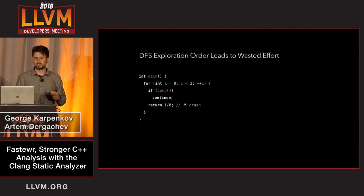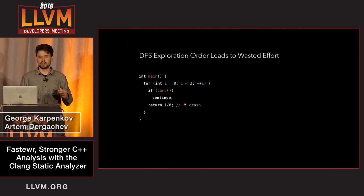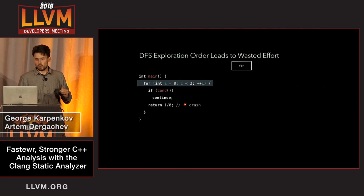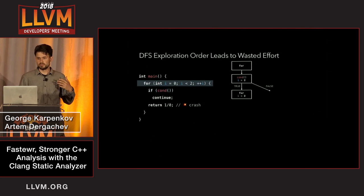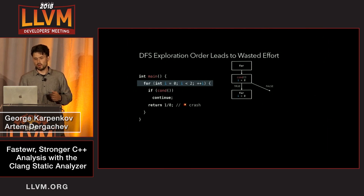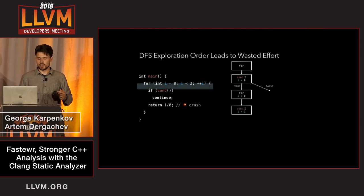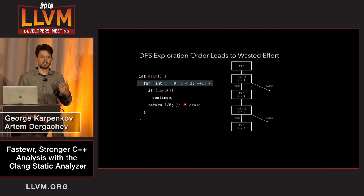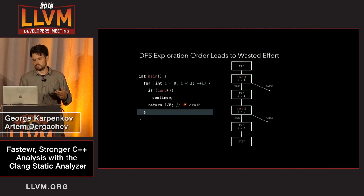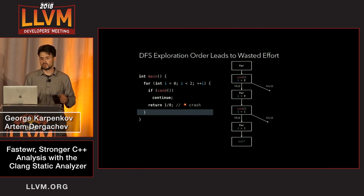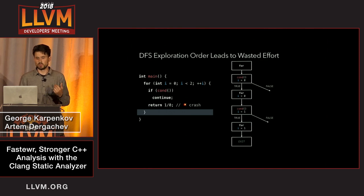Previously, the analyzer was using a depth-first search iteration order. Stepping through a simple example with a loop and a simple branch inside: we start at the head of the loop, hit the branch, and first explore the case where the branch value is true, which brings us back to the start of the loop. Again we hit a branching point, and in depth-first search fashion we explore the first child first, which brings us to the end of the program. But we still have items in the worklist, so in a first-in-last-out fashion we explore the last node we have.